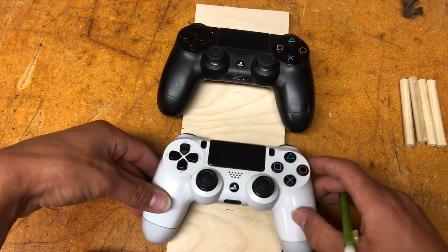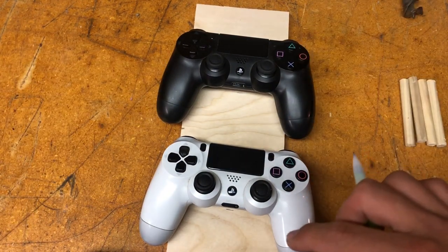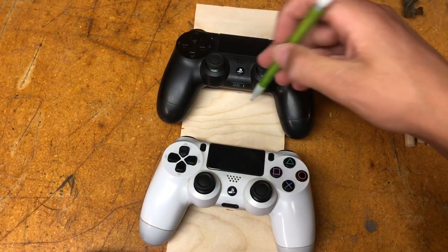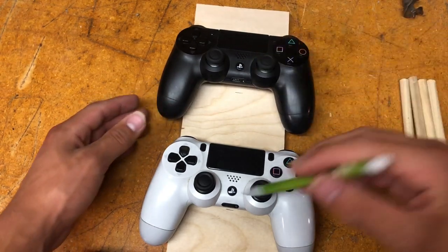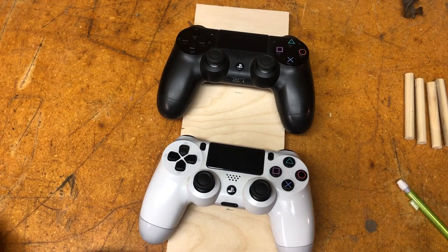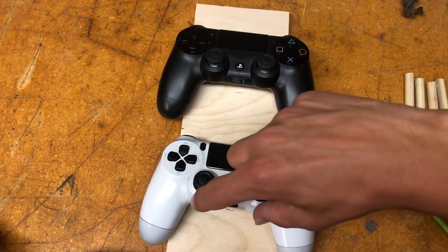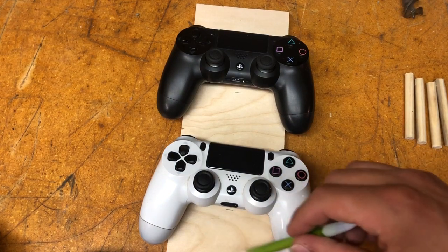So now I'm just gonna line up where exactly I want them. I kind of want the top and the bottom spaces to be close to even. So I already lined it up, drew those lines. Now I'm just gonna measure the distance in between this and that and then start marking it up on the board.